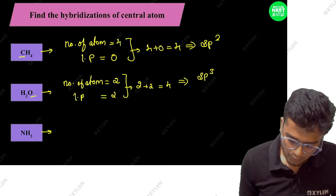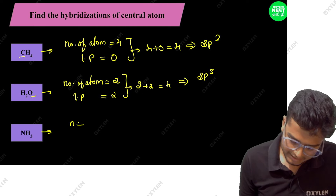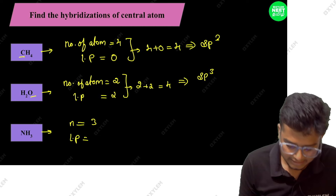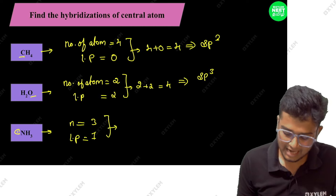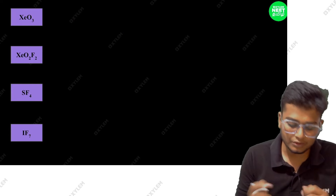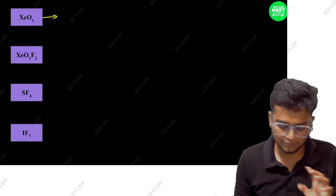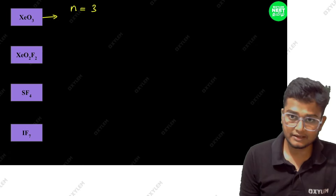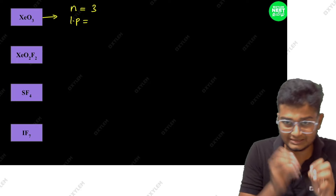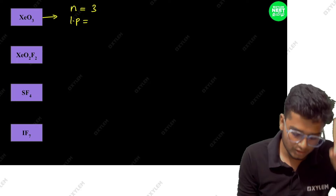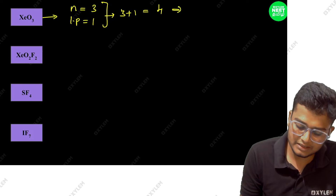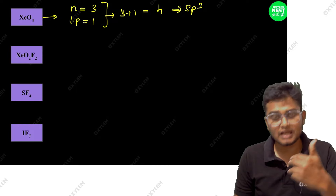Next, ammonia. Take the number of atoms: nitrogen has 3 hydrogens, so number of atoms is 3. Lone pairs on nitrogen: 1. So 3 plus 1 equals 4. That gives SP3 hybridization. So ammonia is SP3 hybridization.